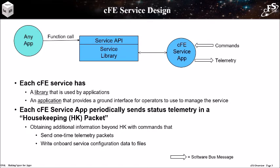This results in an event message being sent on the software bus and routed to the ground. There are different types of event messages, and one of the event service features allows the ground to filter which types of messages are sent. If the ground wanted to enable debug events, they would send a command to the event service app. Each service app periodically sends a housekeeping packet that contains overall status. It's often necessary to gather more data from a service, so many services offer two methods: sending a single telemetry packet in response to a command, or writing large amounts of data to a file that can be transferred to the ground.